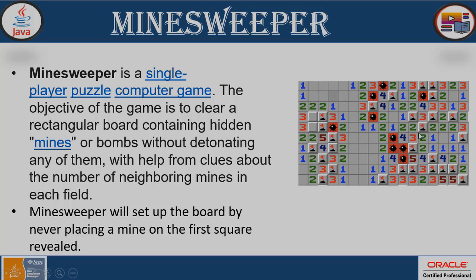As you can see, this rectangular board is a kind of a field, and inside this field you have hidden mines — a kind of bomb. You can see these are the bombs. All you need to do is click on a cell, and when you click on it, either you will get a bomb or some numbers. You need to clear this rectangular board in one click, and that's how you earn the score points.